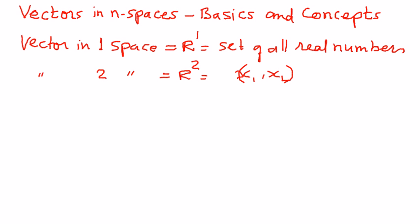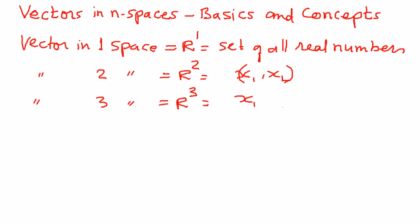The third one is a vector in three spaces, represented as R3. This is a set of all ordered triples of real numbers. The triples could be (x1, x2, x3).